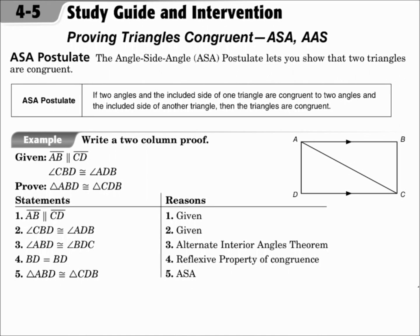This is lesson 4.5, Proving Triangles Congruent: ASA and AAS. Your objectives are to use the ASA postulate to test congruence and to use the AAS theorem to test for congruence.